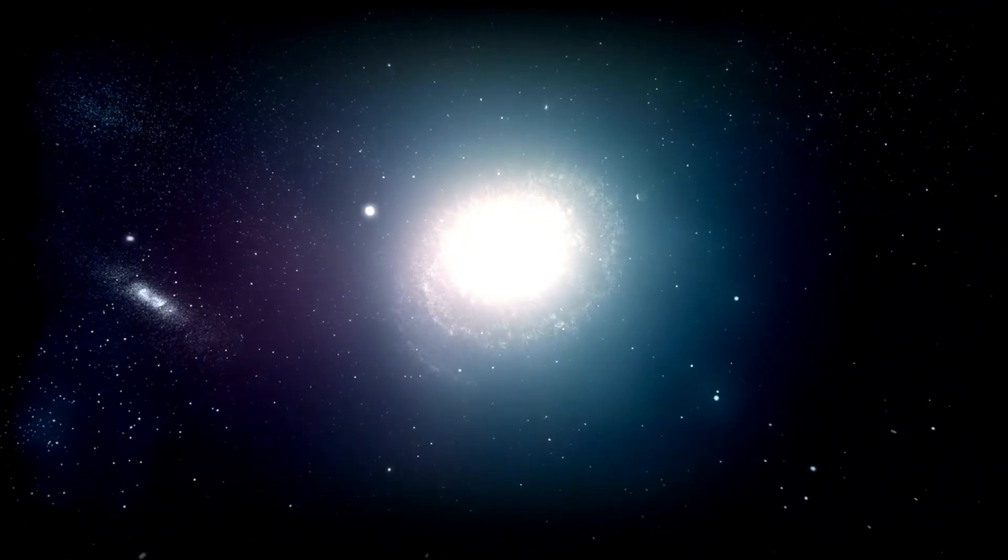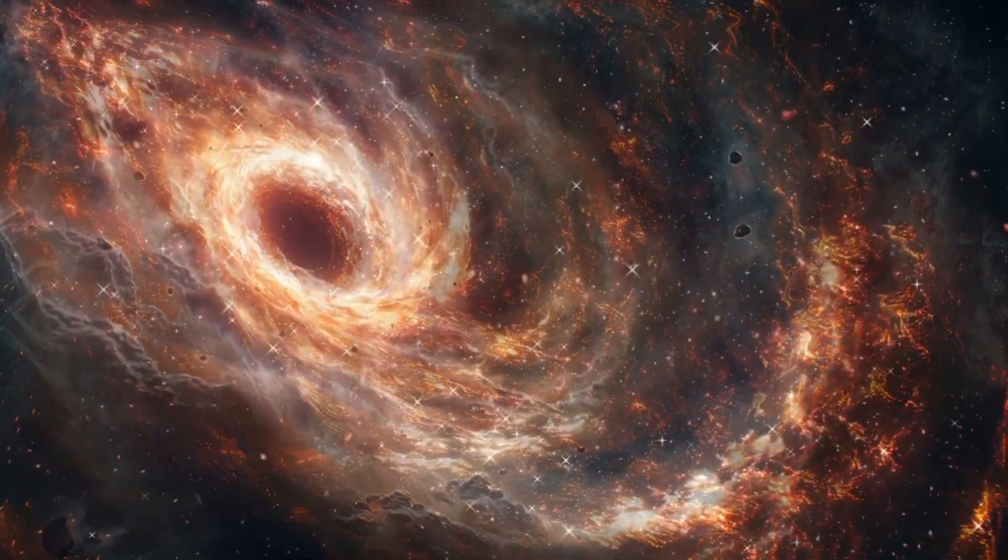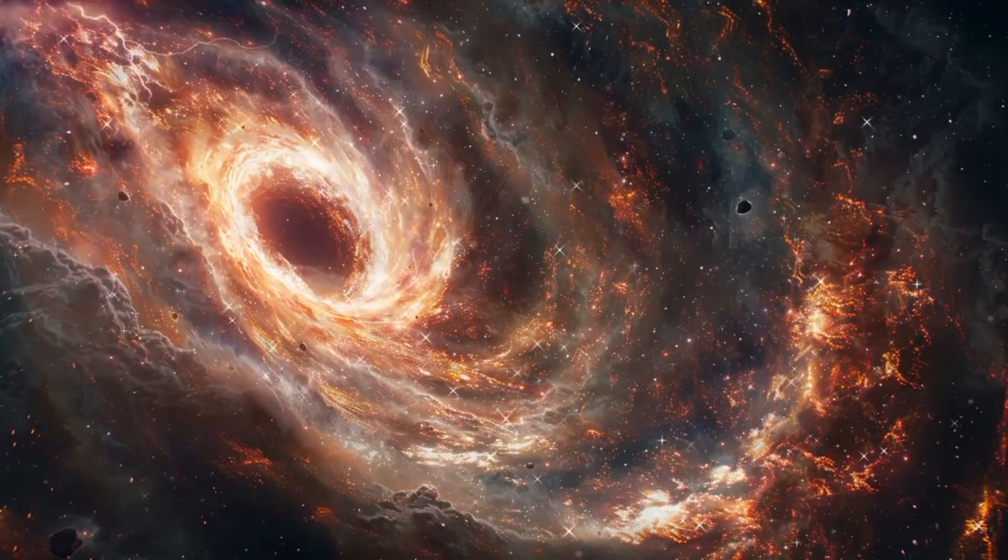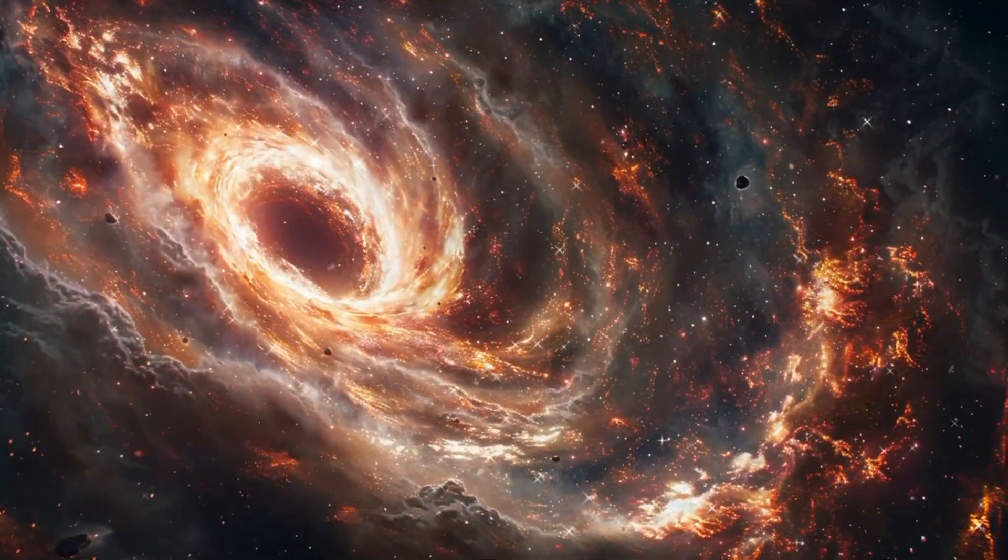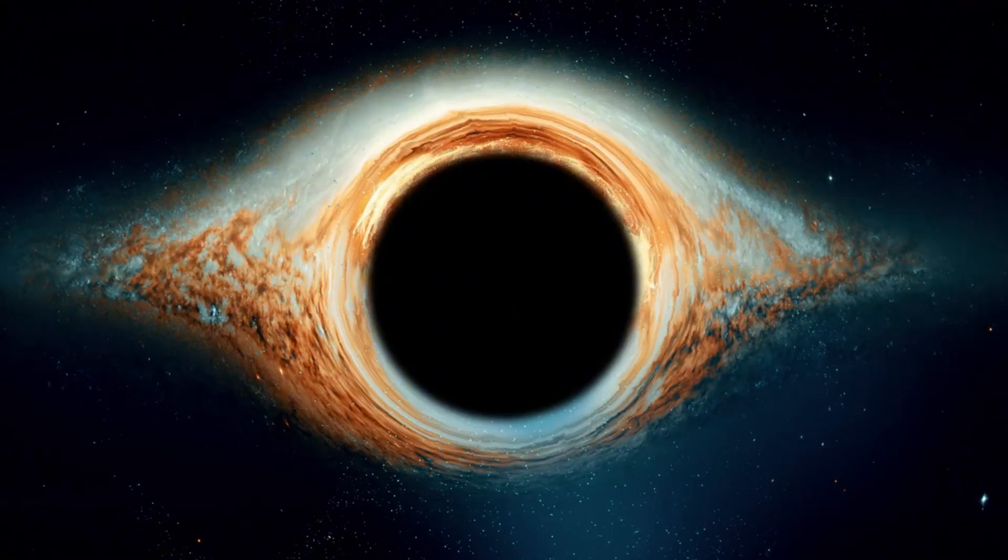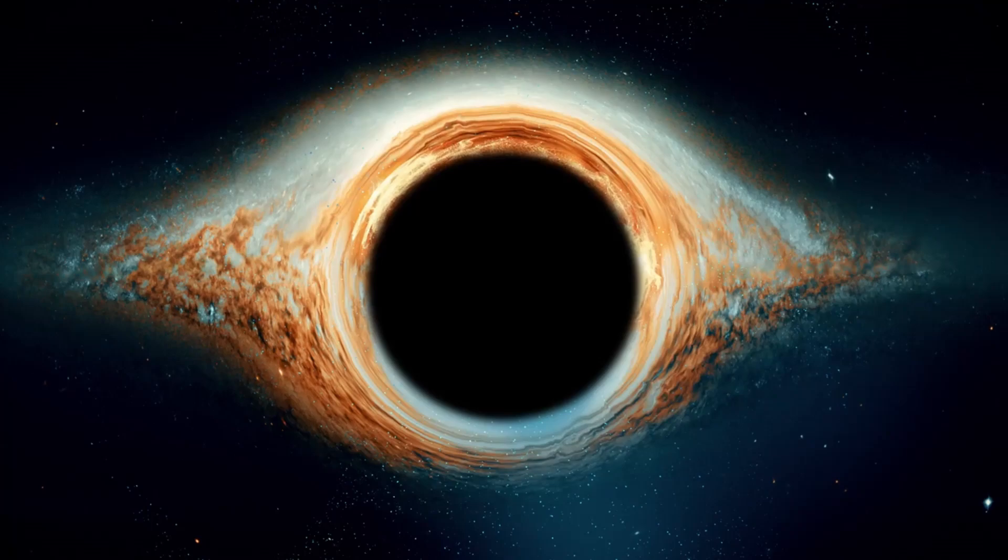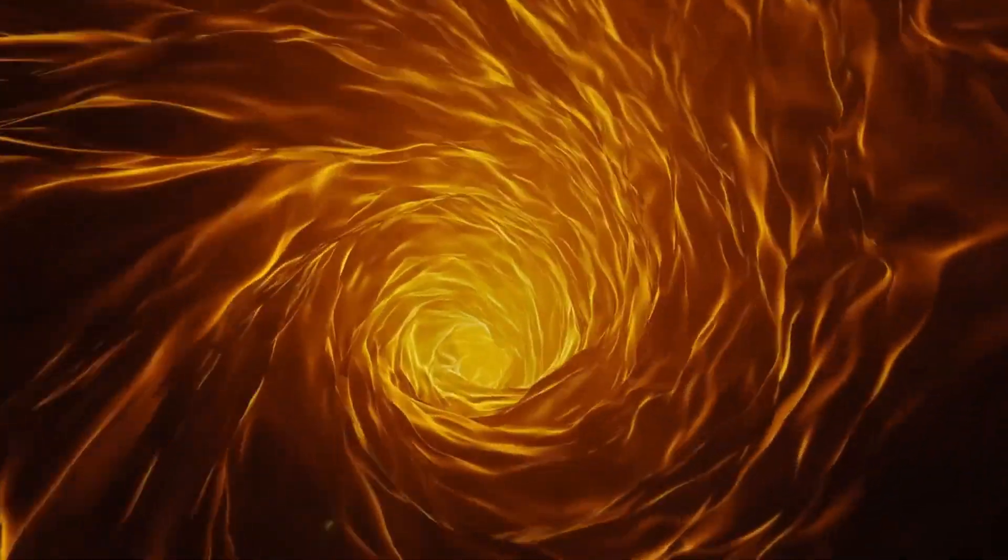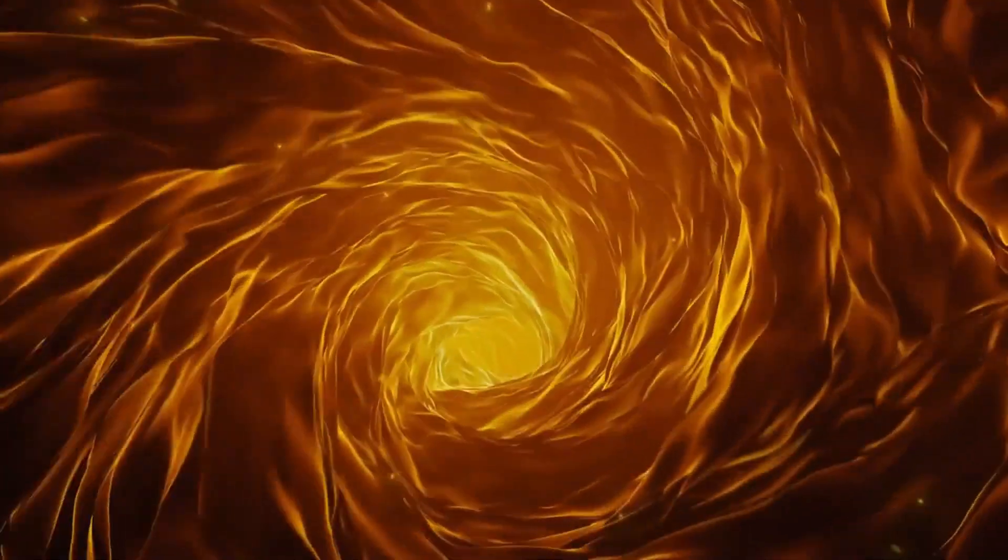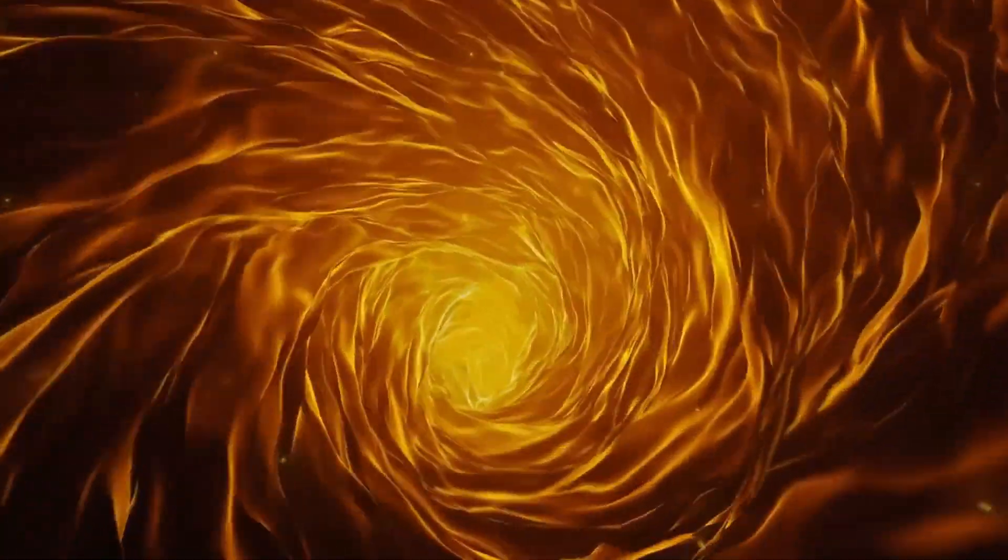Identifying black holes is no simple task since they emit no light. However, researchers have found ways to infer their presence by observing their impacts on neighboring matter. For instance, if a black hole passes through a cloud of interstellar matter, it will pull that matter towards it in a process called accretion. When a normal star gets too close, it can get destroyed, emitting x-rays as it does so.